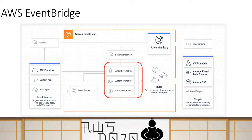As mentioned earlier, it is based on a pub and sub model. That means there will be certain sources or services which will publish the message to the EventBridge. And there will be certain subscribers to the EventBridge who will be willing to receive the message based on the source of the message, the content of the message, or many other parameters. So the key and central point of EventBridge is the EventBus, where people publish the message.